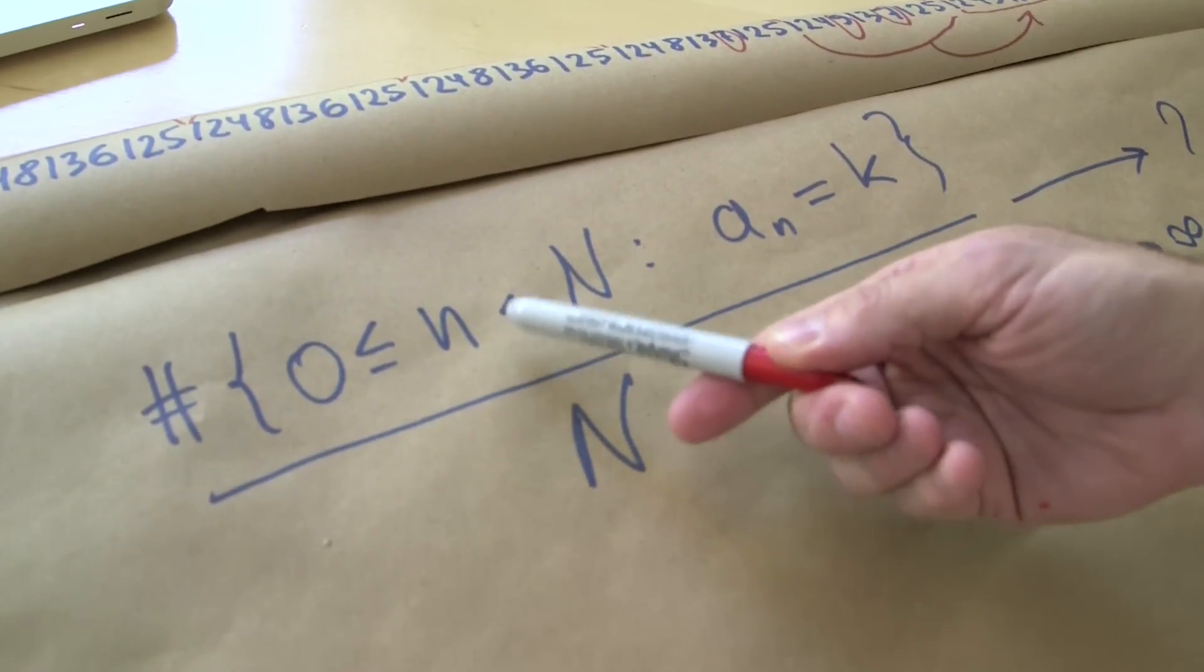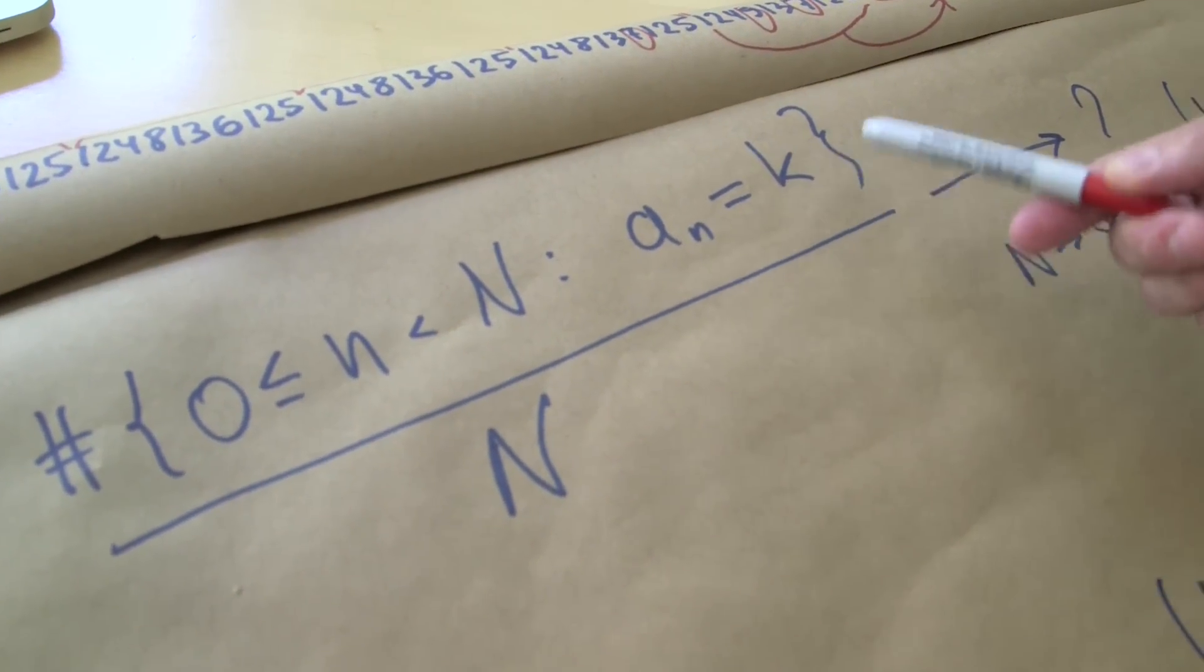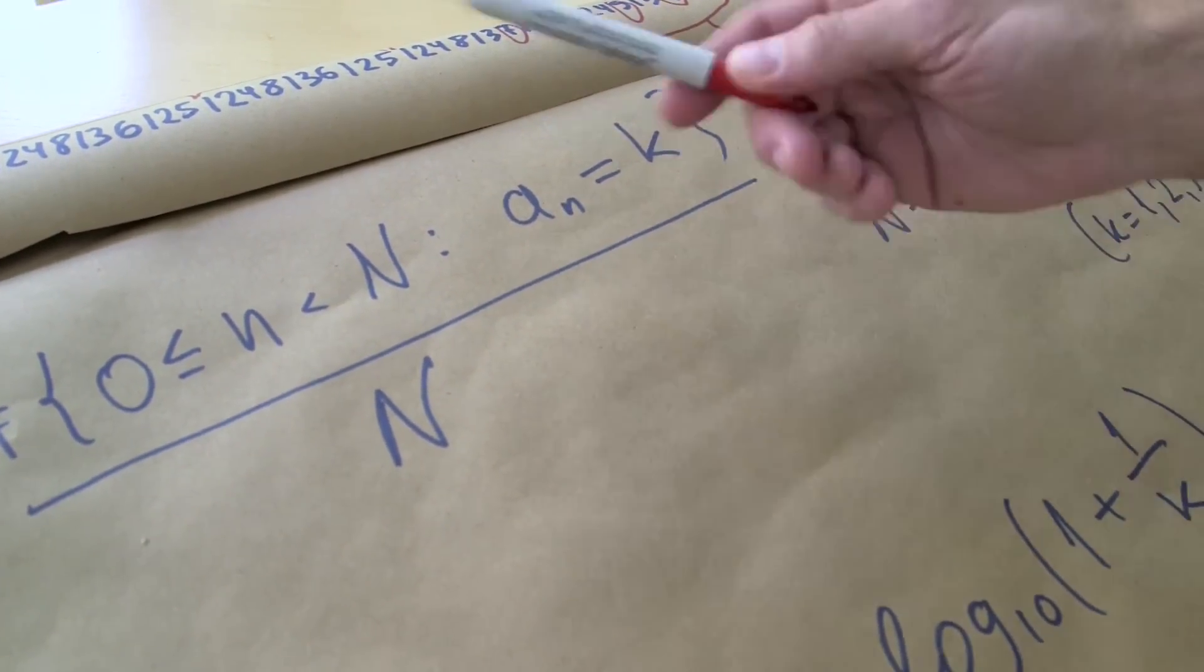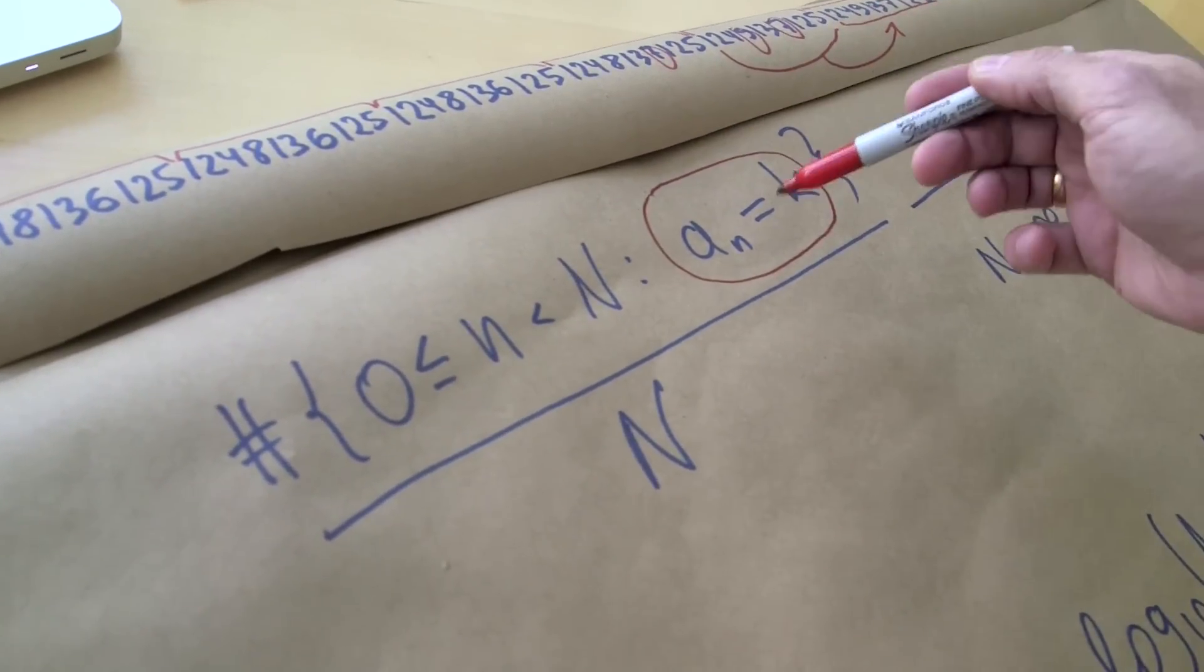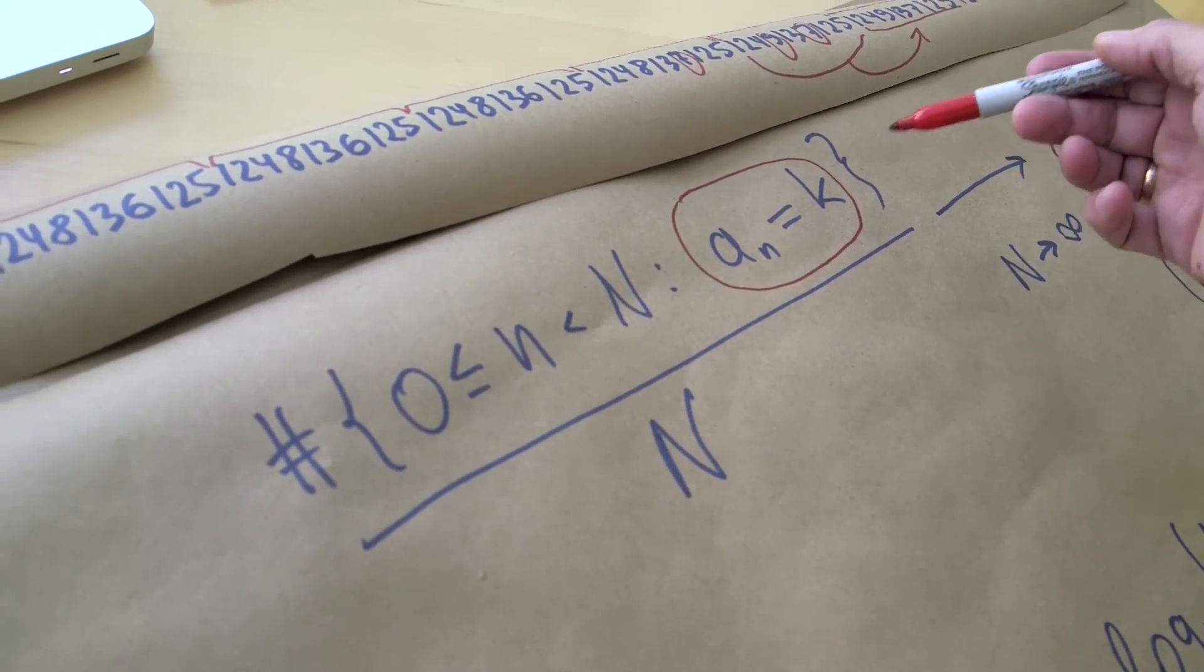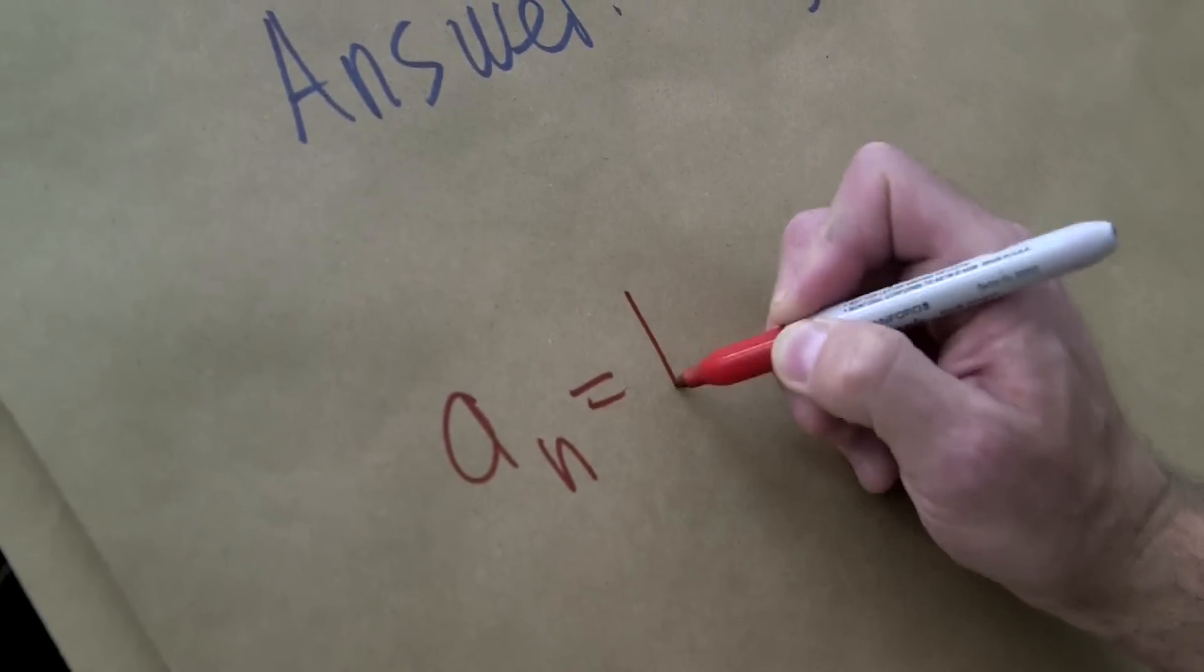This is the sequence we're talking about: the number of times n where a sub n is equal to 1, for example, or 7. We divide by n. Later on we want to understand when does it happen that the first digit of 2 to the n is equal to k, where a sub n equals k.